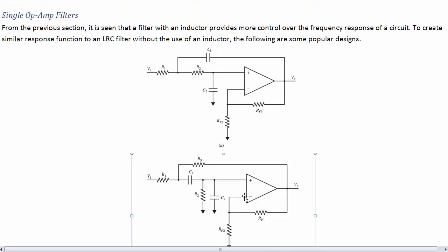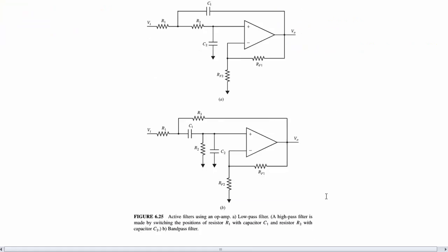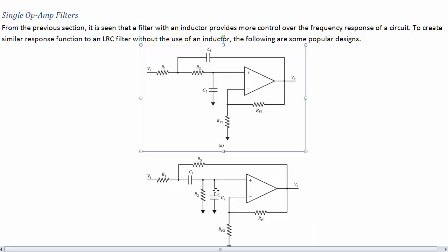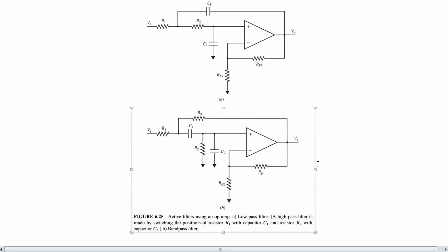So here are some designs of filters using op amps. So the first one is a low-pass filter and to get a high-pass you would just switch position R1 with C1 rather, and R2 with C2. So just swap those around and then it's a high-pass filter. And this one with kind of a combination of both of those things going on is behaving like a band-pass filter.